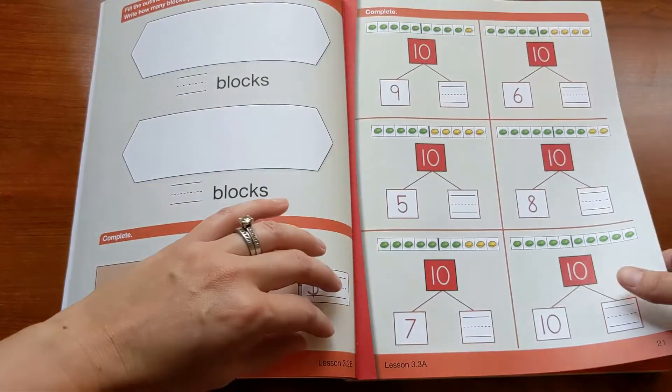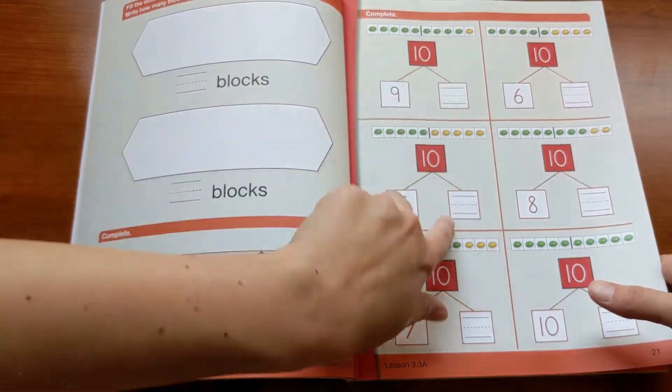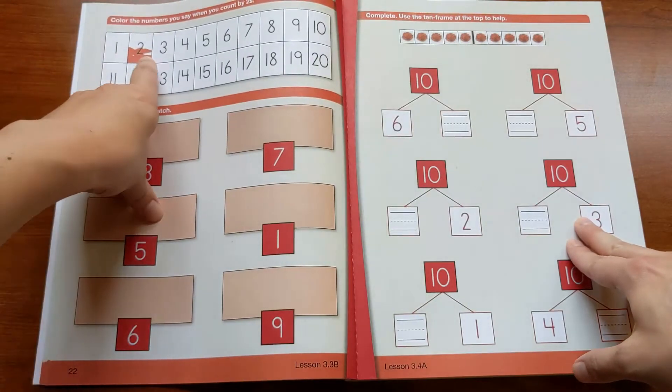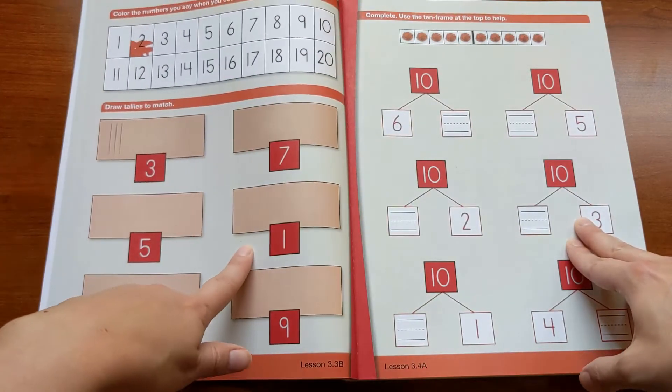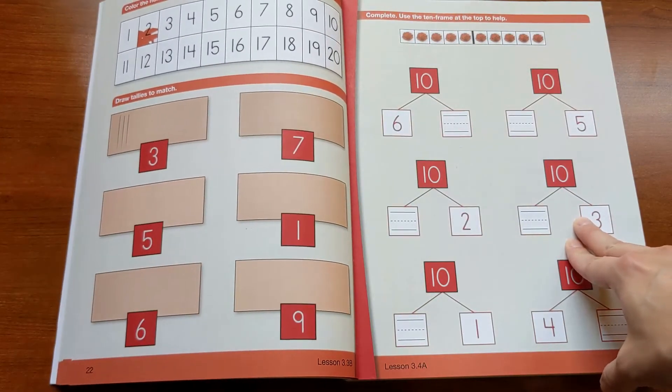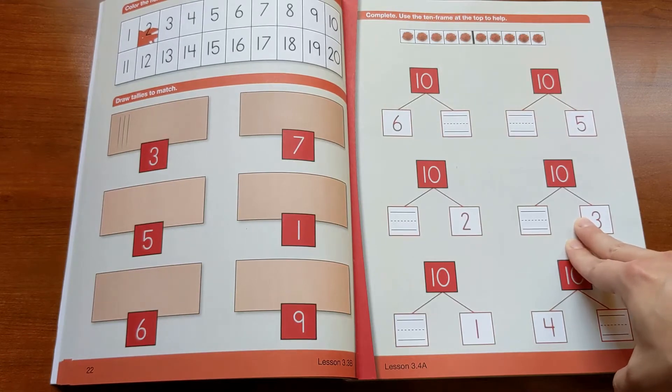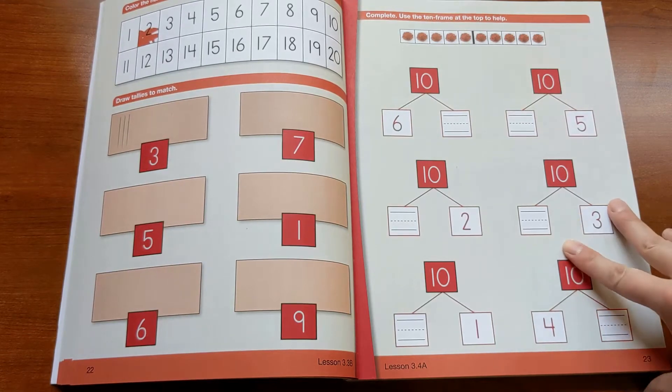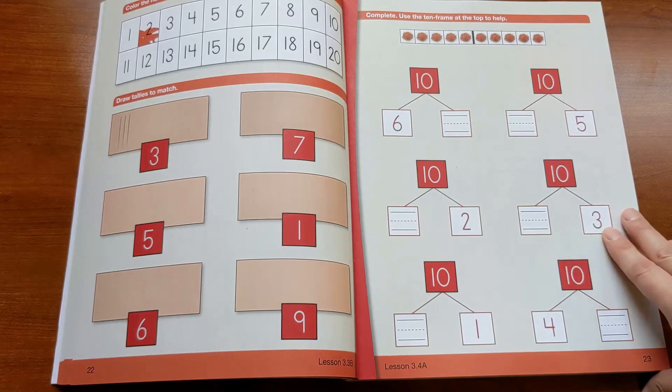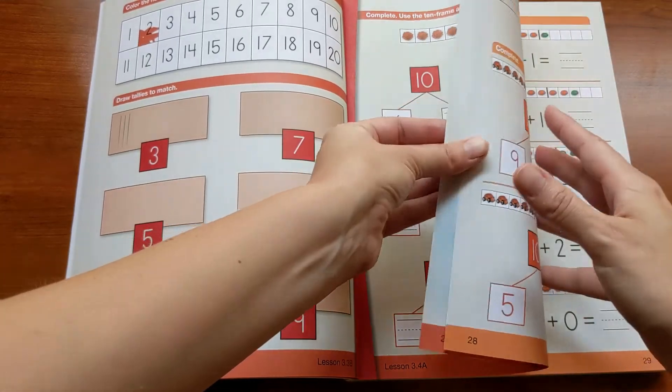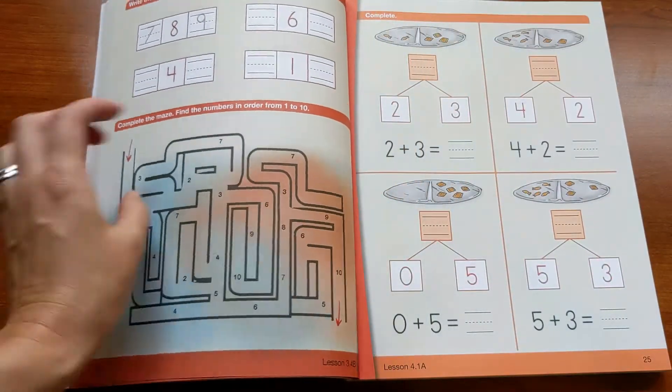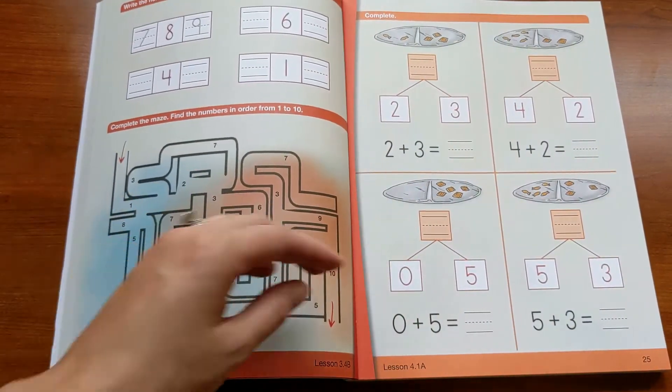And then on the back, there's review. So in this lesson, the child worked on understanding pairs that make 10. And then on the back, they practice counting by twos and drawing tallies. So these are super simple, super short. Really, the bulk of the lesson should be spent in the hands-on part. They'll be spending probably about 10 to 15 minutes with hands-on instruction and the child will spend five to 10 minutes doing the worksheet, depending on how pokey they are, how fast they are. It really varies a lot depending on the child.